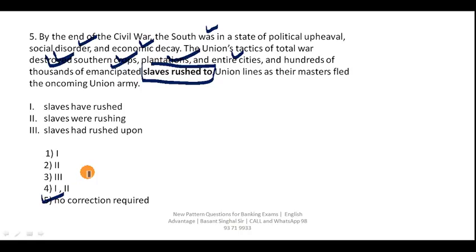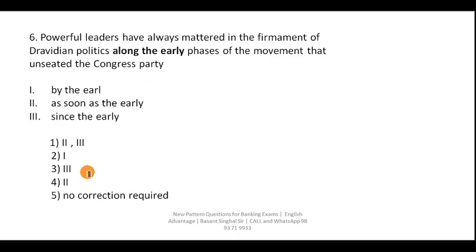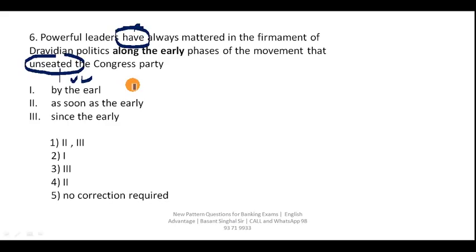Question 6: 'Powerful leaders have always mattered in the firmament of rebellion politics along the early phase of the movement that unseated the Congress party.' You must know the structure where in the first part we use present perfect tense and in the second part we use past simple tense — for example, 'I haven't seen him since he left the company.' This is the same kind of structure, so you replace 'along' with 'since the early.' Your answer is third.